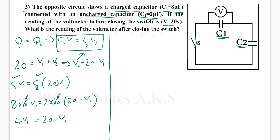So now I just bring the V1 to the other side. I will have 4 V1 plus V1 equals 20, which means 5 V1 equals 20, which will give me, of course we divide both sides by 5, V1 equals 20 over 5, which equals 4 volts.